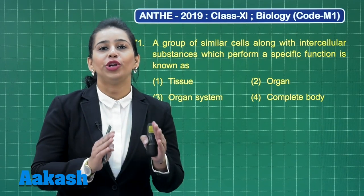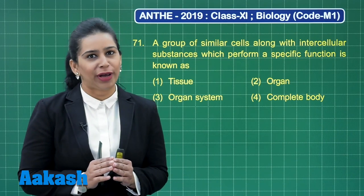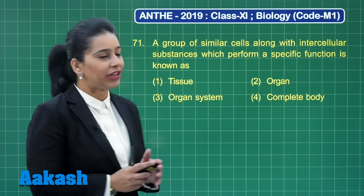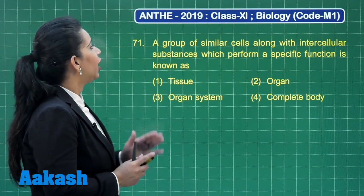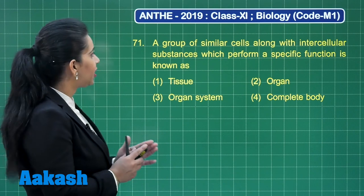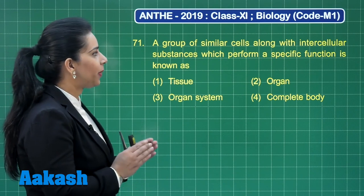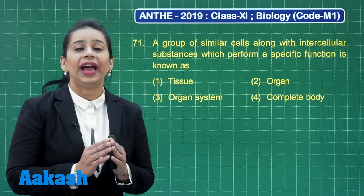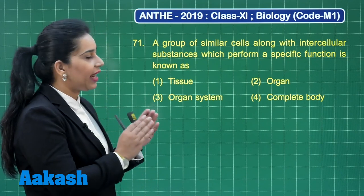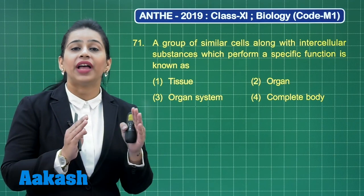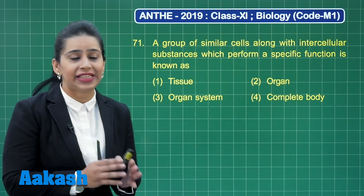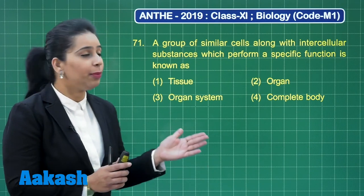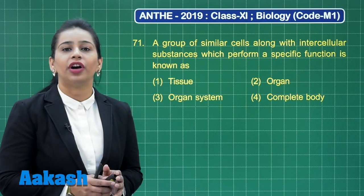Hello everyone, welcome to the solutions of zoology part of biology section NTHAE 2019 class 11. Let us start with the very first question, question number 71, which says: a group of similar cells along with intercellular substances which perform a specific function is known as — this is a question from the chapter animal tissues. Tissue is the correct answer, as a tissue is comprised of a group of cells with intercellular substances in the intercellular spaces, and they perform a specific function.